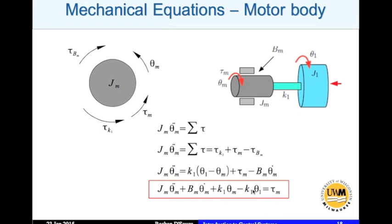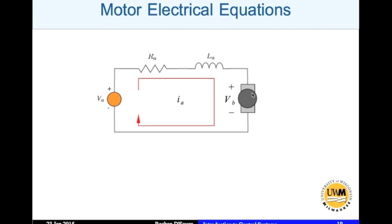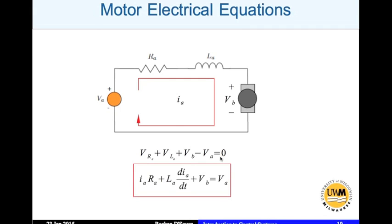For the electrical equations, we apply Kirchhoff's voltage law. The current direction hits VB positive first, so it is taken as positive, and it hits VA negative first, so VA is negative in the loop. This gives: VR_a + VL_a + VB − VA = 0. Substituting all values: I_a * R_a + L_a * (dI_a/dt) + VB = VA. That is the electrical equation.